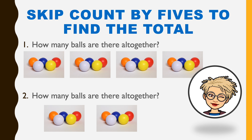I want you to try some skip counting on your own. But before we do that, we're going to do two together. Remember when I told you that skip counting helps you to find the total faster? Let's try number one. How many balls are there altogether? Each group of balls is in groups of fives, so we can skip count in fives to find the total. 5, 10, 15, 20.